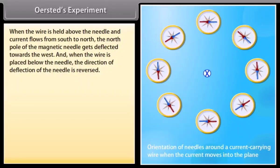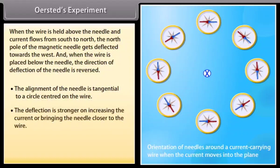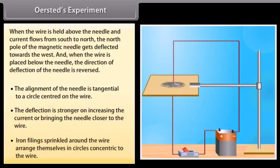When the wire is placed below the needle, the direction of deflection of the needle is reversed. The alignment of the needle is tangential to a circle centered on the wire. The deflection is stronger on increasing the current or bringing the needle closer to the wire. Iron filings sprinkled around the wire arrange themselves in circles concentric to the wire.